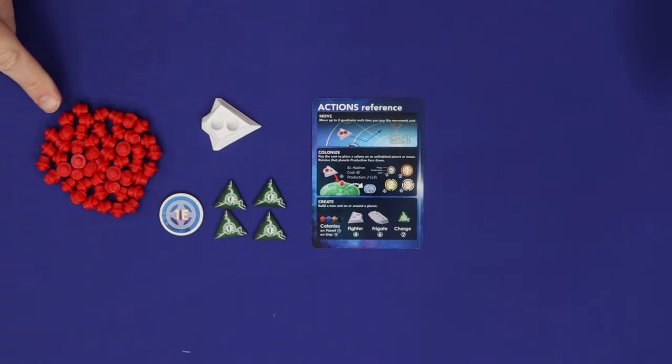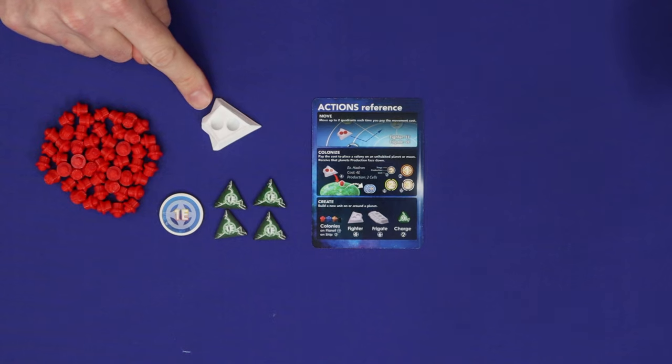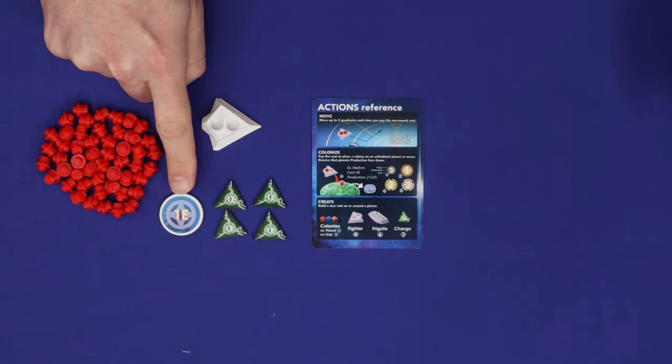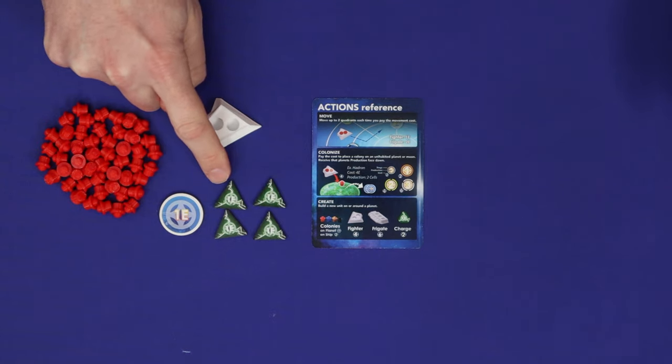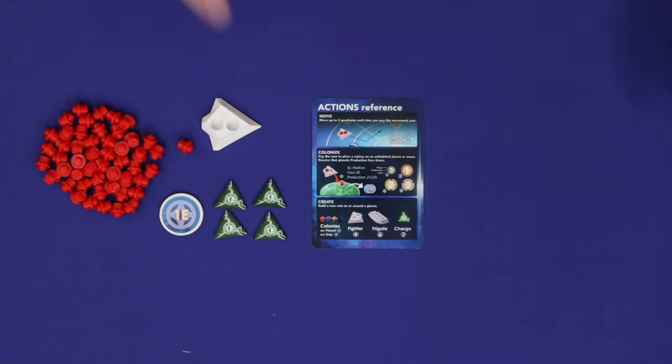Each player takes all the colony pieces in their color, one fighter, one of the circular energy cells, four of the triangular energy charges, and a player aid.